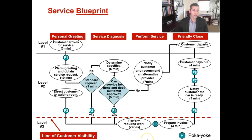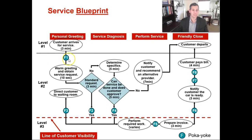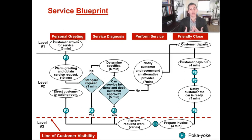Using an oil change as an example: the customer arrives for some kind of service — that's level one, they're in control. The first poka-yoke, F1, could be a bell on the door to notify your employees that someone is there, so you can physically go and welcome them into your facility. Then level two — you and the customer are interacting. You're talking about their request: what are they there for, can you provide the service? If they need an oil change, great. If they need an engine repair, they need to go somewhere else. So you then give them a quote — F2 is hand them a quote and have them sign it so they know what their invoice will be and aren't surprised by the bill.